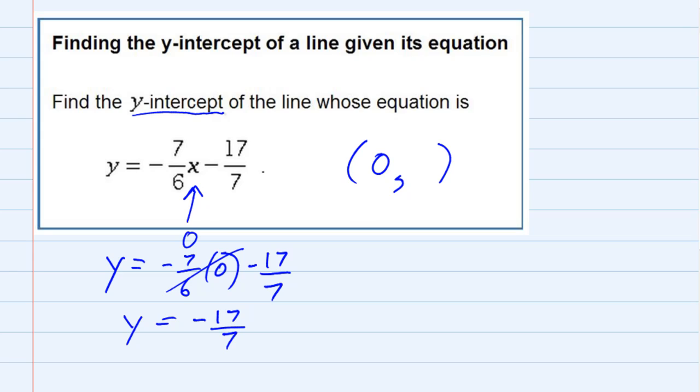Replacing x with zero gave us a y-value of -17/7. That's our y-value. But remember, the y-intercept is this point: (0, -17/7).